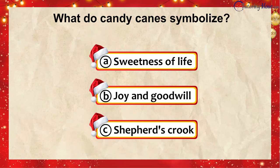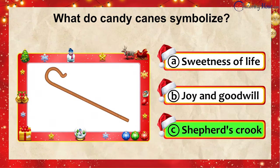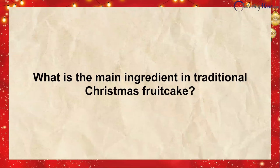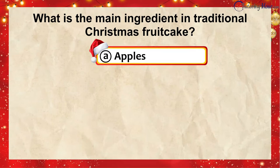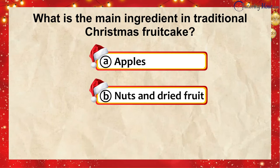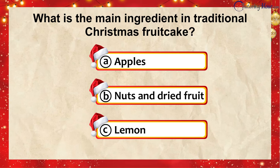And the correct answer is... Shepherd's crook! What is the main ingredient in traditional Christmas fruitcake? Is it... A. Apples, B. Nuts and dried fruit, or C. Lemon?